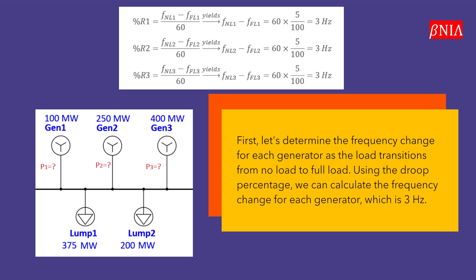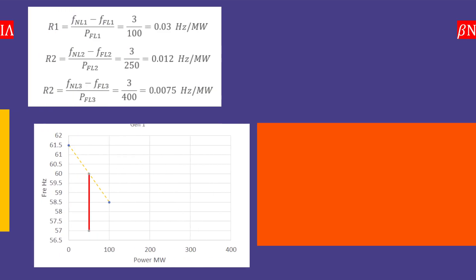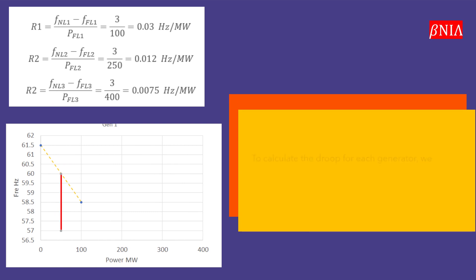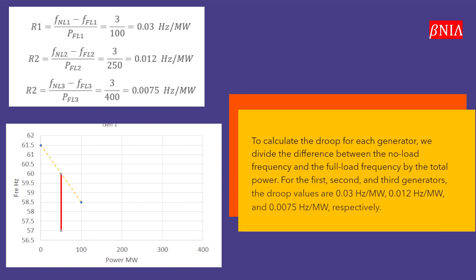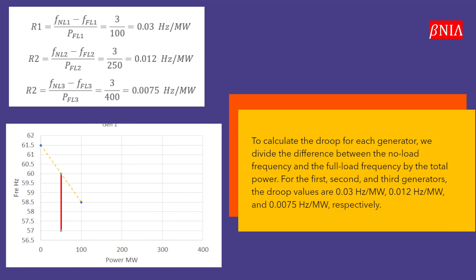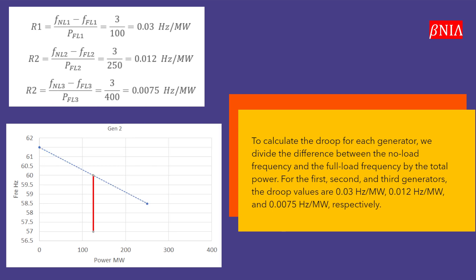Using the droop percentage, we can calculate the frequency change for each generator, which is 3 Hertz. To calculate the droop for each generator, we divide the difference between the no-load frequency and the full-load frequency by the total power. For the first, second, and third generators, the droop values are 0.03 Hertz per megawatt, 0.012 Hertz per megawatt, and 0.0075 Hertz per megawatt respectively.